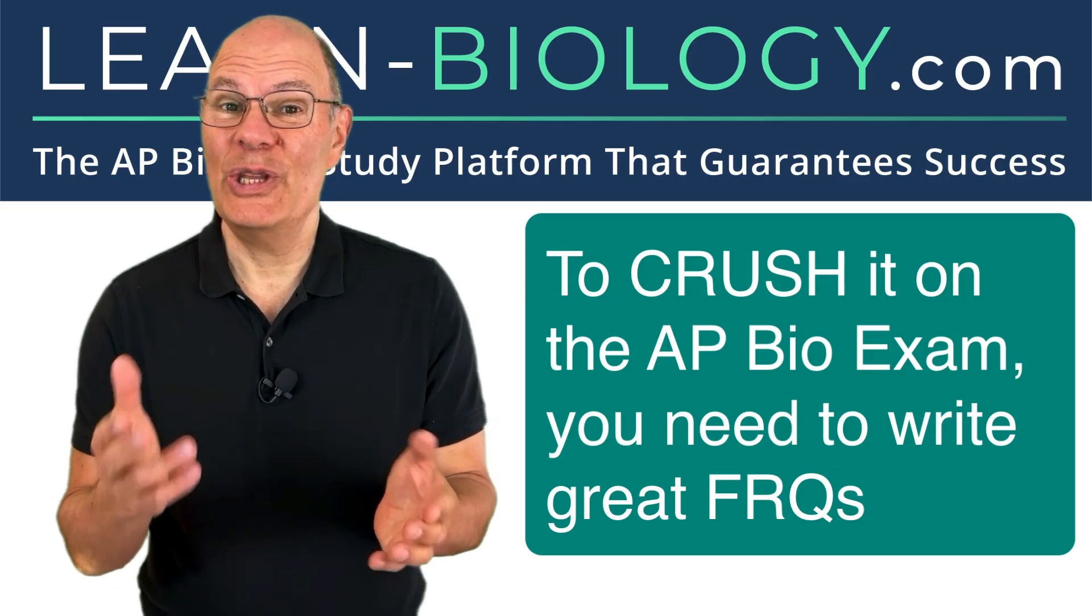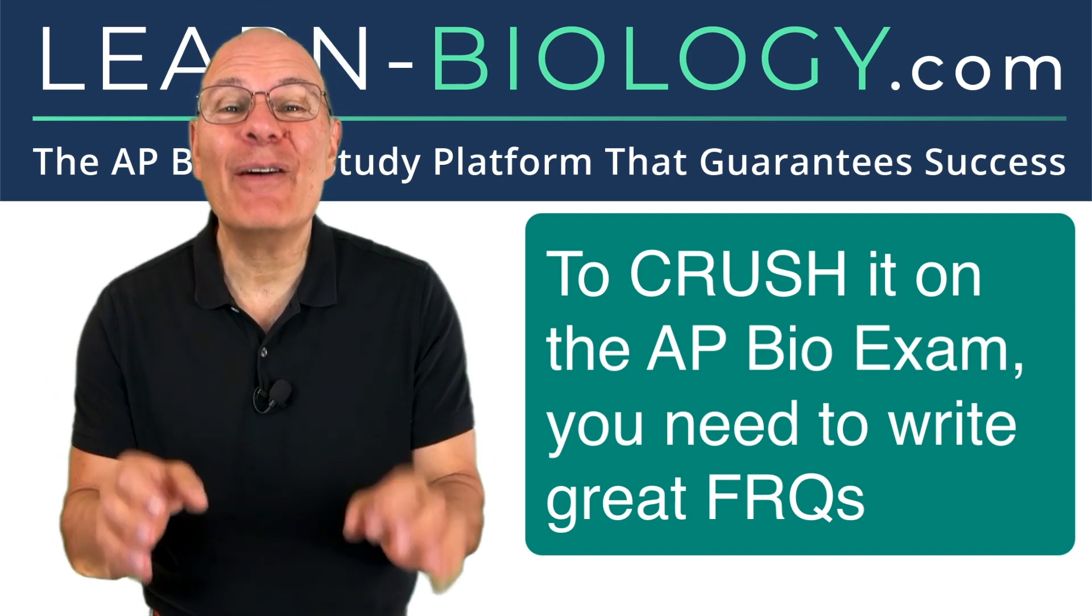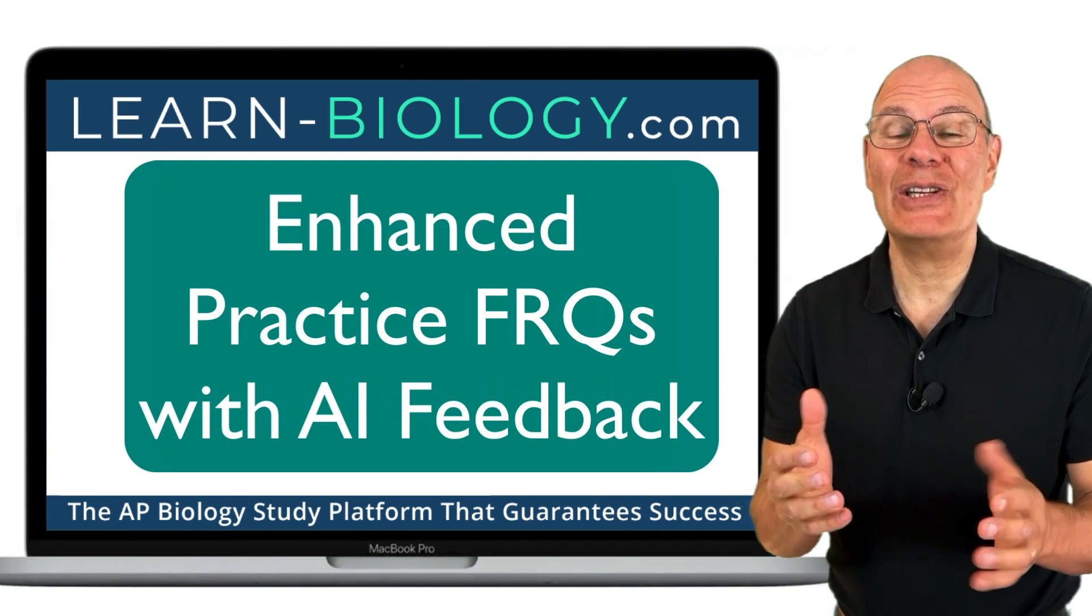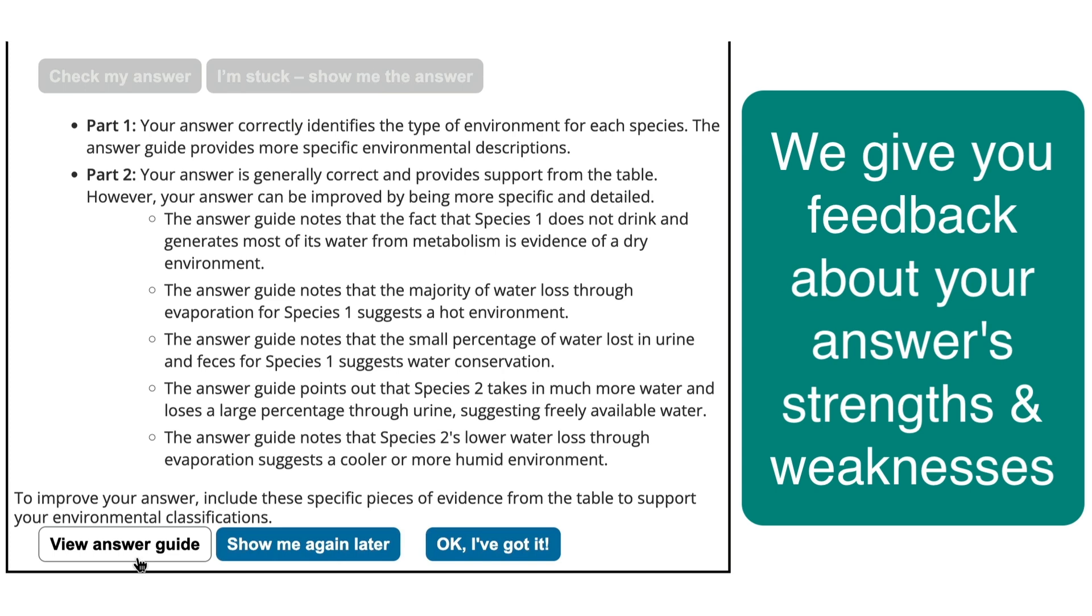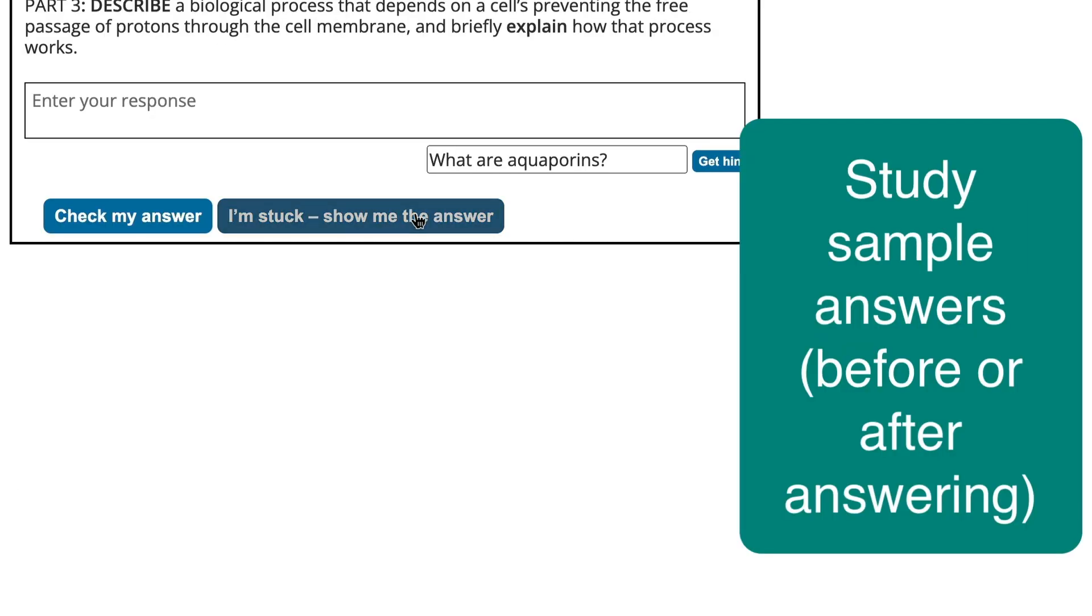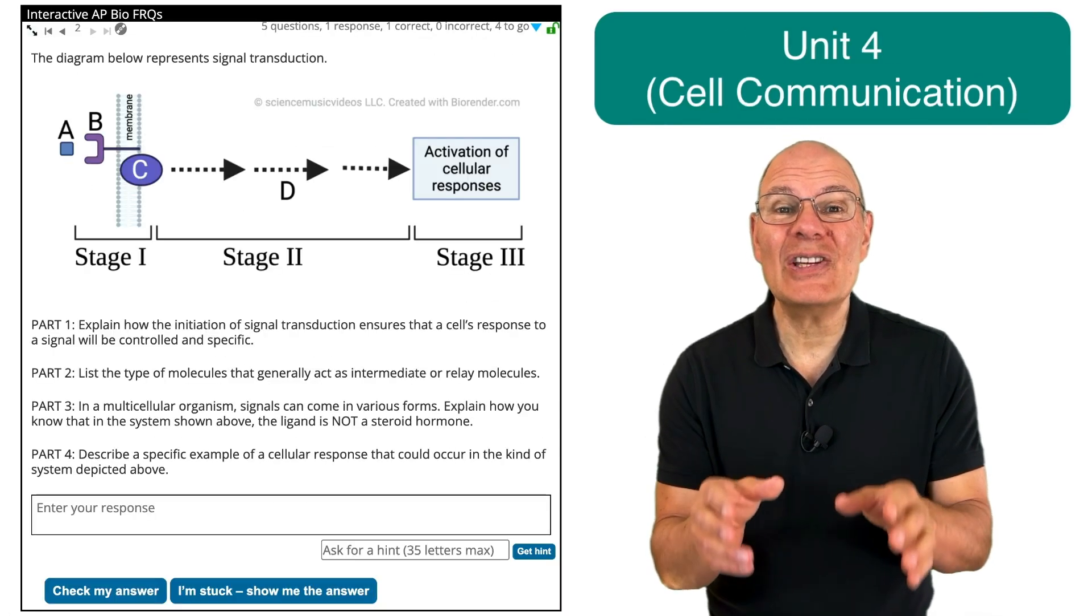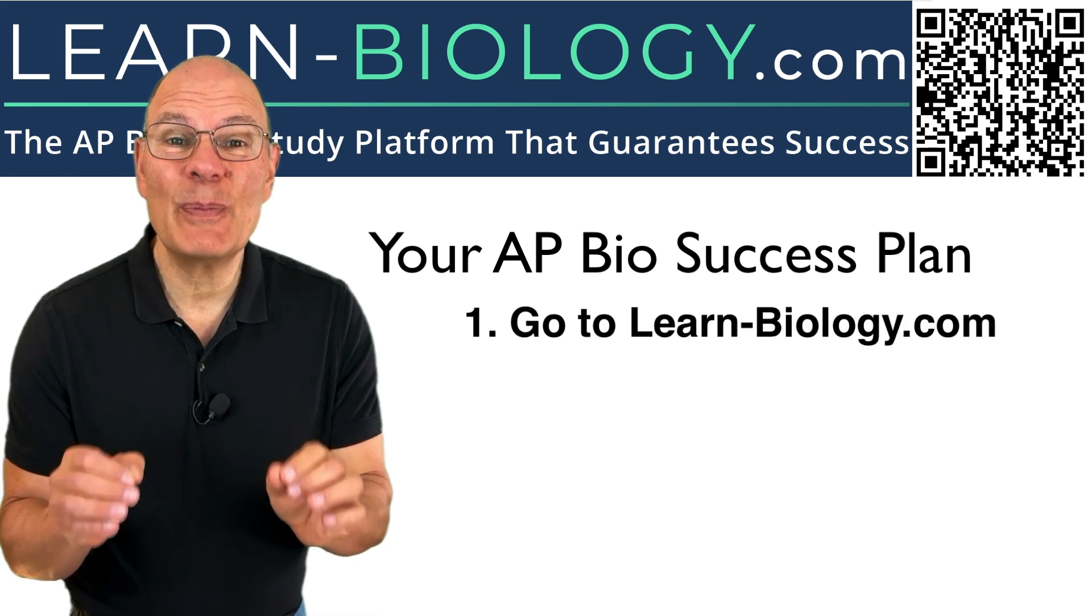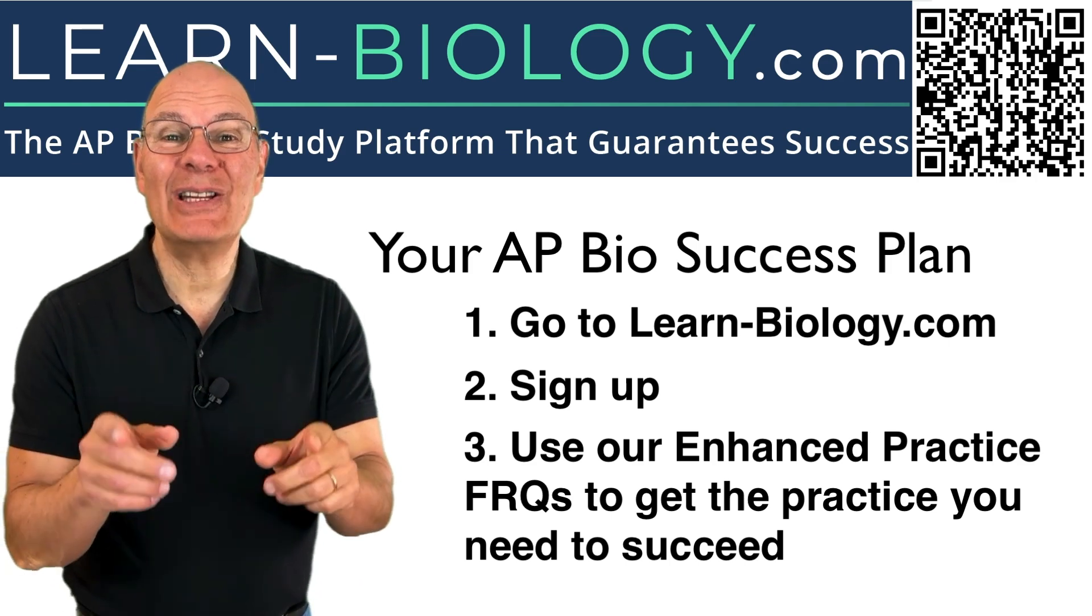If you want to crush it on this year's AP Bio Exam, then you're going to have to write great responses on the FRQ portion of the exam. It's half of your score. Where can you learn how to do that? On learn-biology.com with our enhanced practice FRQs. You read a prompt, you type in your response. We give you feedback telling you about your answer's strengths and weaknesses. If you need help, you can ask for a hint. If you're really stuck, you can study a sample answer. We have dozens of practice FRQs, and this is the kind of practice and feedback that'll lead you to crush it on this year's AP Bio Exam. So here's your plan: go to learn-biology.com, sign up, use our enhanced practice FRQs to get the practice you need to succeed.